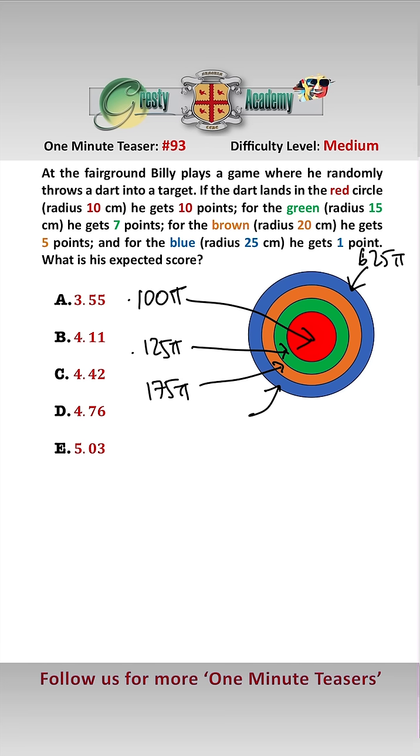And finally the area of the blue bit is 625 pi, take away the brown bit, take away the green, take away the red which gives you 225 pi.